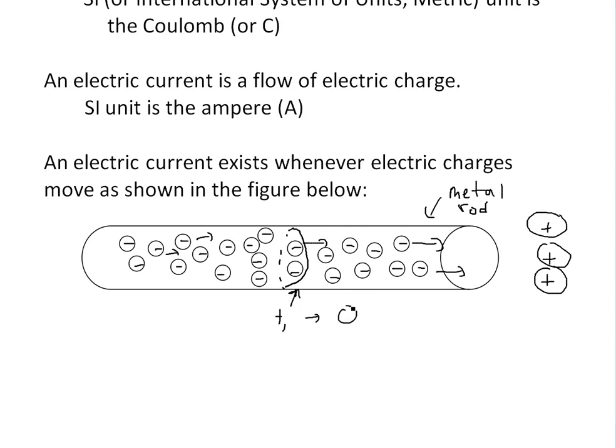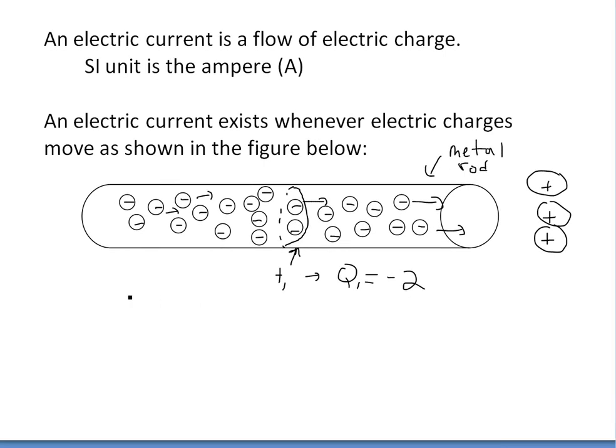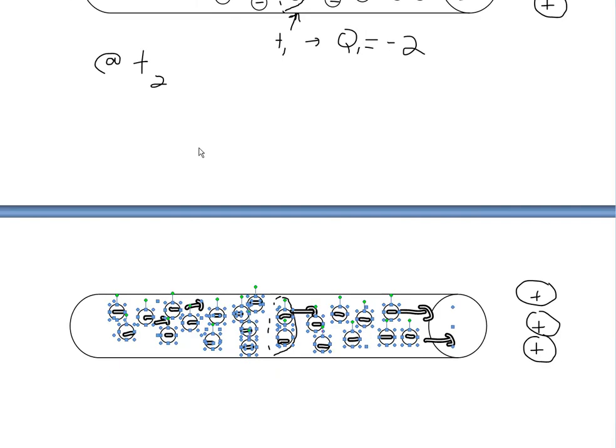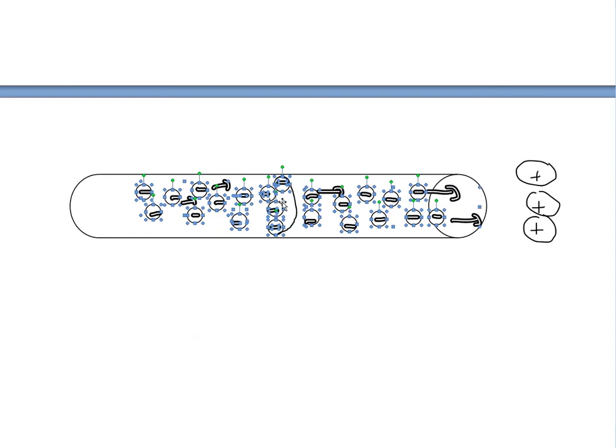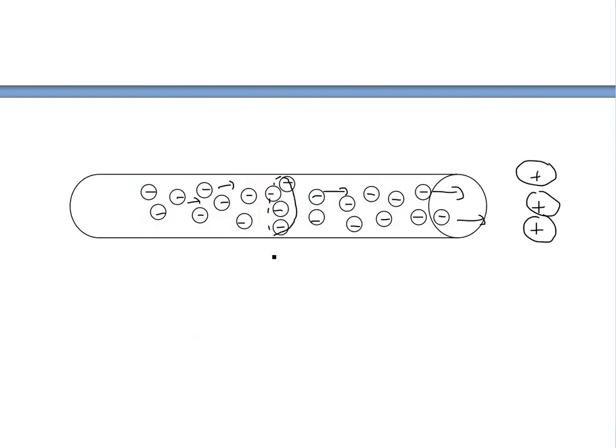At T1, we have this charge Q. We can just say Q is equal to negative 2. This is just oversimplified to show the idea of electric charge moving. At this surface here, there's two of them. So Q1 is -2. And then after one second at T2, after whatever time it is at T2, let's say after a second, you get this point right here. This is at T2.